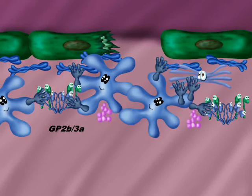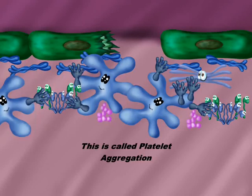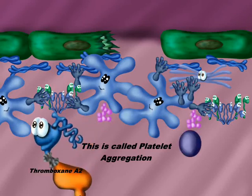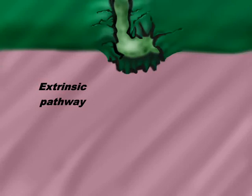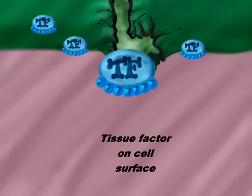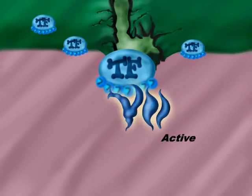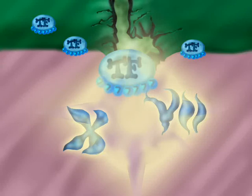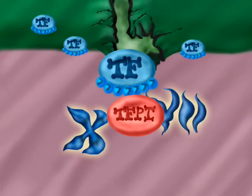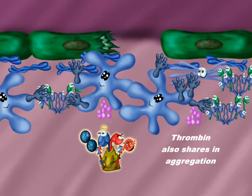Glycoprotein 2B3A binds to fibrinogen to allow platelet-to-platelet aggregation, driven by thromboxane A2 and ADP. Coagulation is initiated by the extrinsic pathway, beginning with tissue factor on the cell surface interacting with factor 7 to activate it. The result is a small amount of thrombin. The extrinsic pathway is rapidly terminated by tissue factor pathway inhibitor, which forms a quaternary complex of activated factor 7, tissue factor, activated factor 10, and TFPI. Thrombin also shares in aggregation.